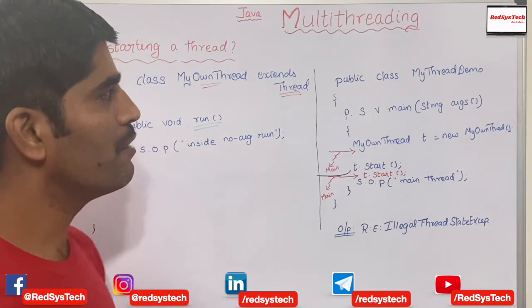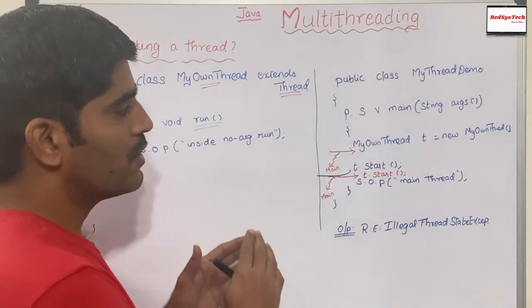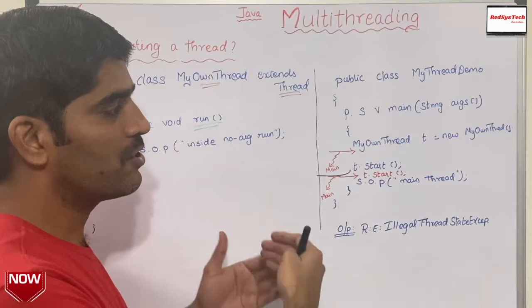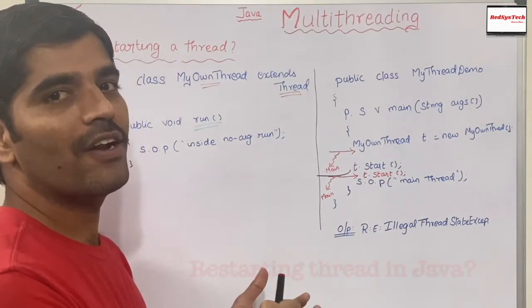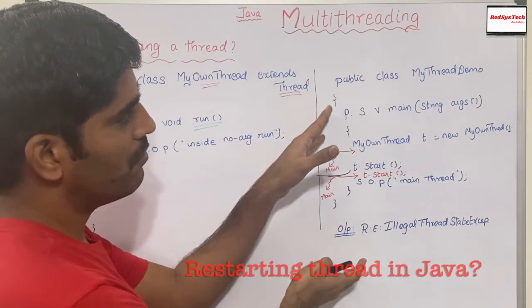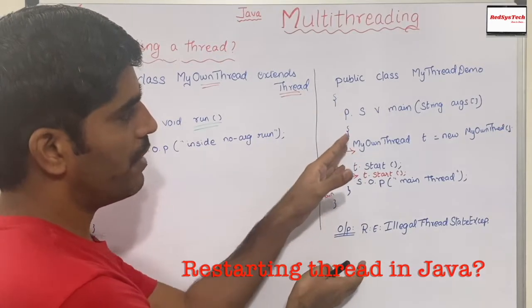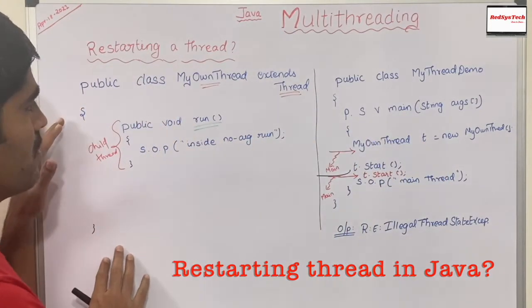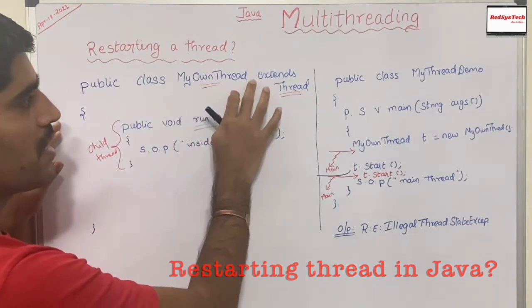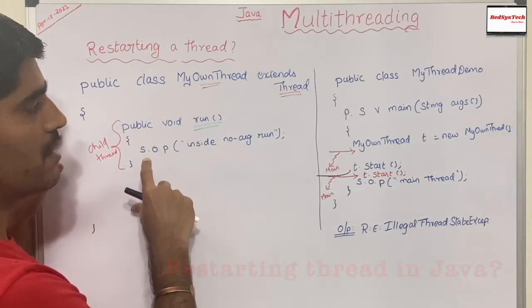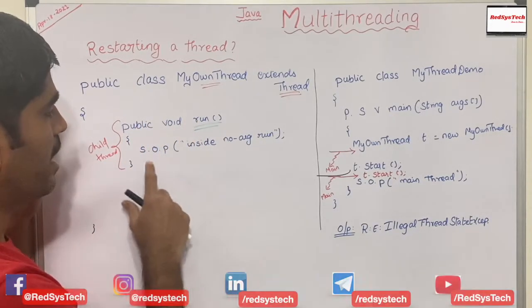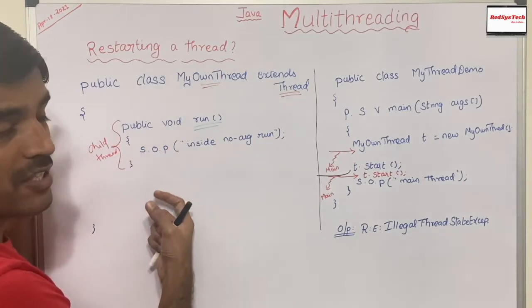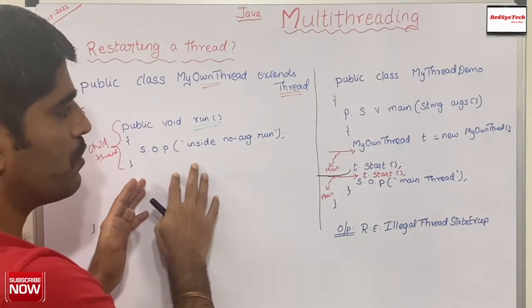So what do you mean by restarting a thread? Restarting a thread means once a thread has been started, if you try to start the same thread again, that is called restarting a thread. Let's say I have a main class with a main method, and I have a class which extends Thread where I override the run method and write a piece of code inside it. We call this the job of a thread.